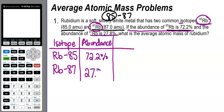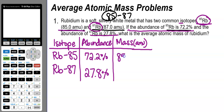The last column in the table is the mass of each isotope, given in the problem in amu. It's important to note that mass number and atomic mass are not the same thing — mass number is always a whole number, while atomic mass is not. Rubidium-85 has a mass of 85.0 amu and rubidium-87 has a mass of 87.0 amu. In this case the mass number and atomic mass happen to be the same, but that won't always be true.